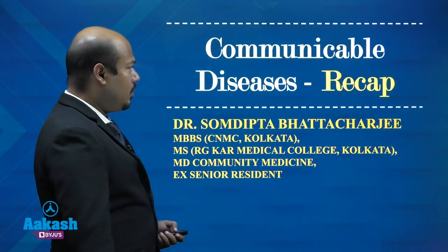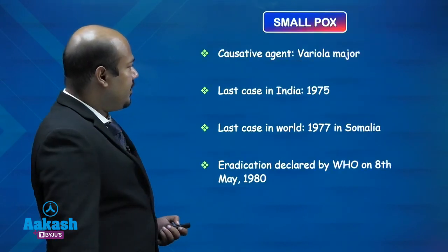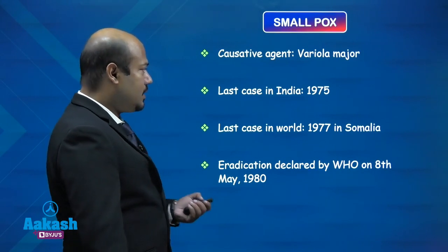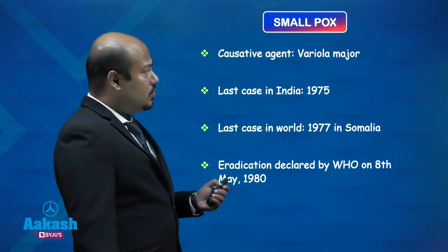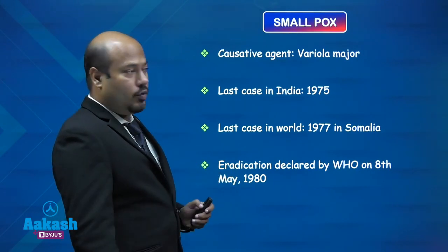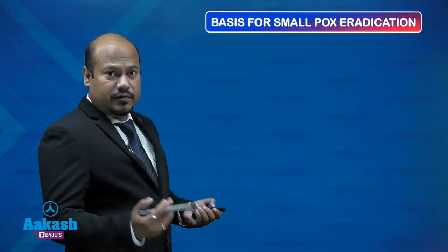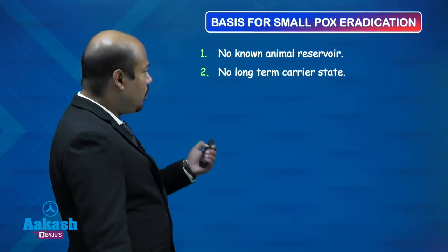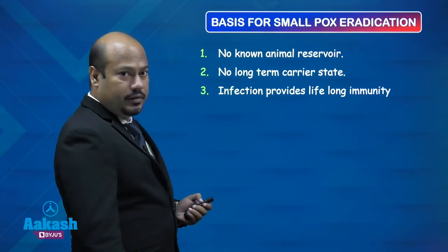We'll recap some important topics of communicable disease, starting with respiratory infections. Smallpox: the causative agent is variola major. The last case was in India in 1975 and the last case in the world was in 1977 in Somalia. It is the only disease eradicated completely throughout the world. The basis for smallpox eradication: number one, there was no known animal reservoir; number two, no long-term carrier state; and infection provides lifelong immunity.